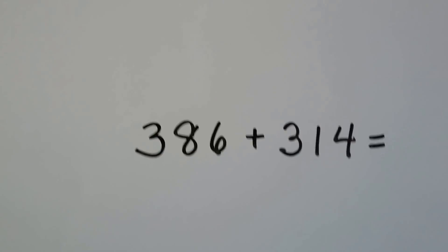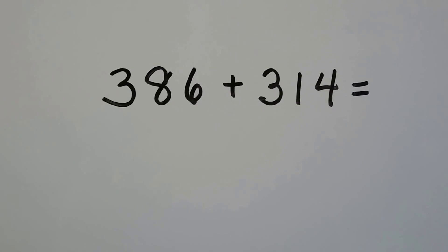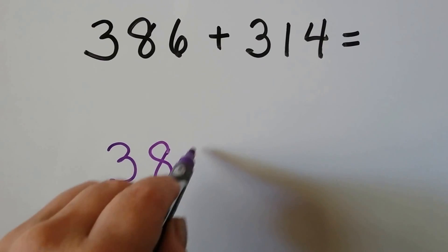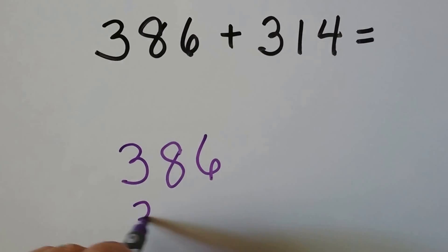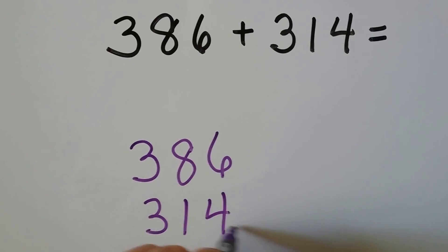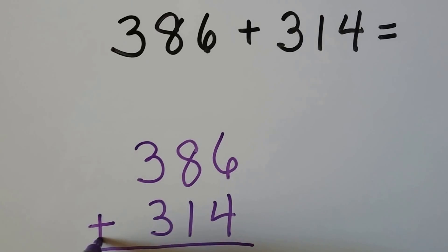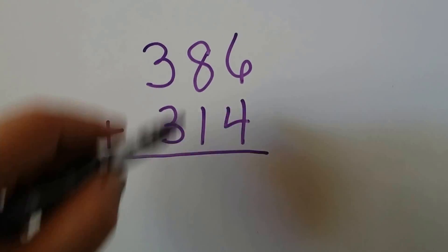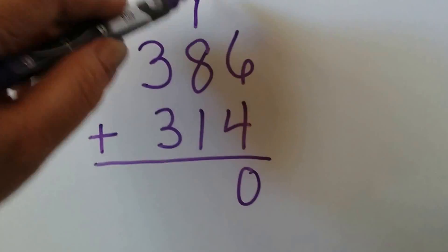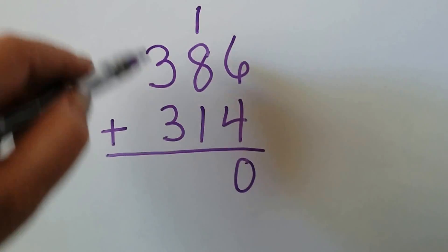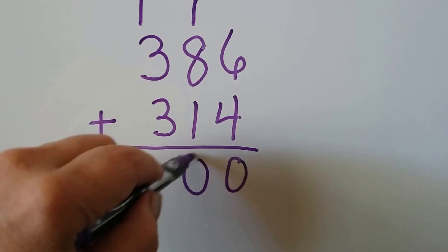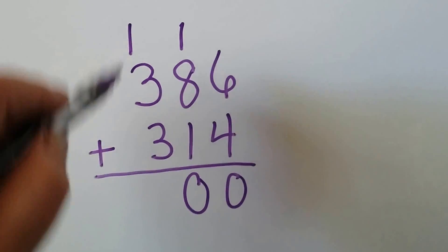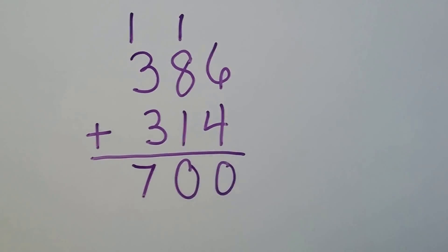Let's try this one. We need to write it in vertical form and then add. So let's make sure we keep our columns nice and straight. 6 plus 4 is 10. We regroup the 1 and put the 0 down. We add the tens: we get 10. We add the hundreds: 3 plus 3 is 6, plus 1 more is 7. And we have 700.